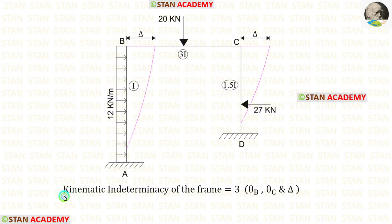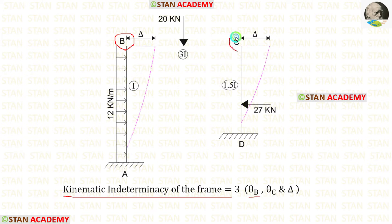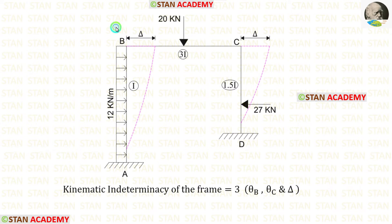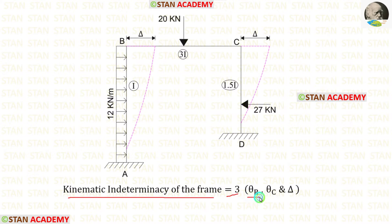Now let us find the kinematic indeterminacy of the frame. At joint B there is slope theta B, and at joint C there is slope theta C. We know that this frame is subjected to sway. Let us assume the sway occurs towards the right side. So the kinematic indeterminacy of the frame is 3: theta B, theta C, and the sway delta.